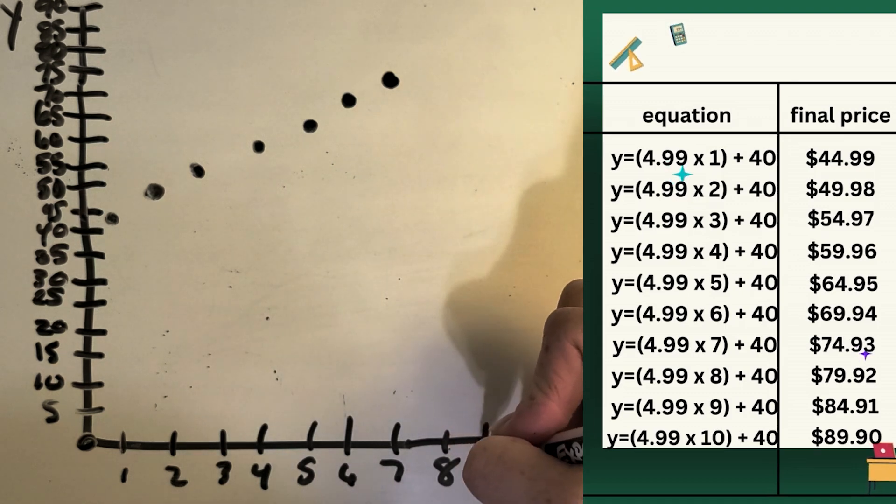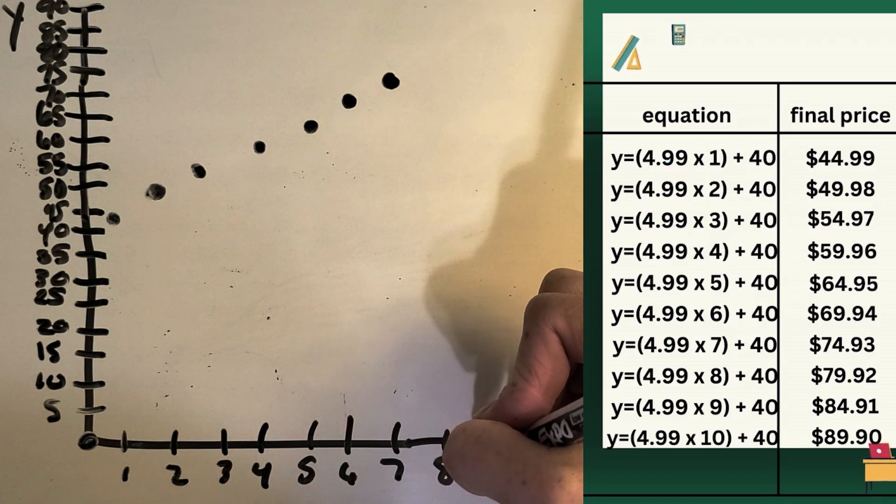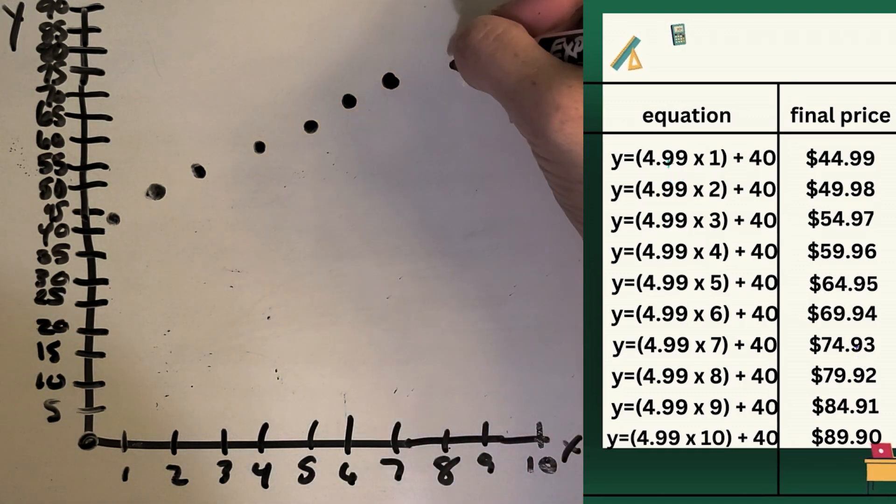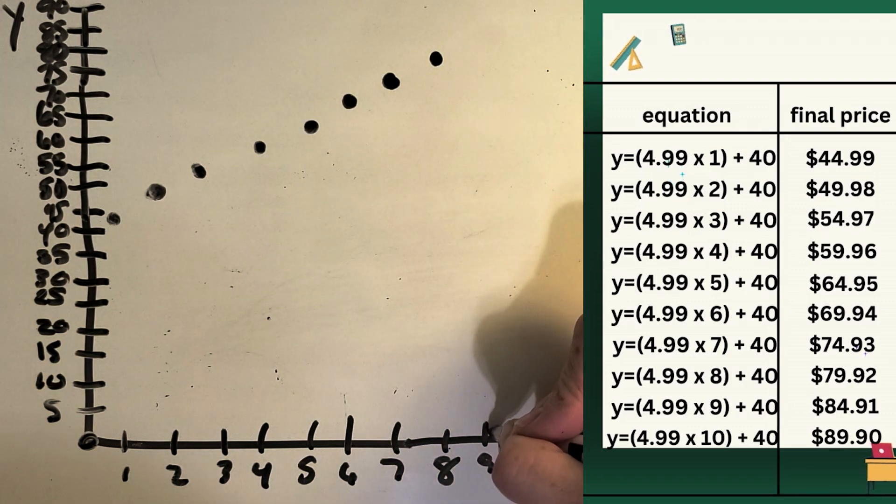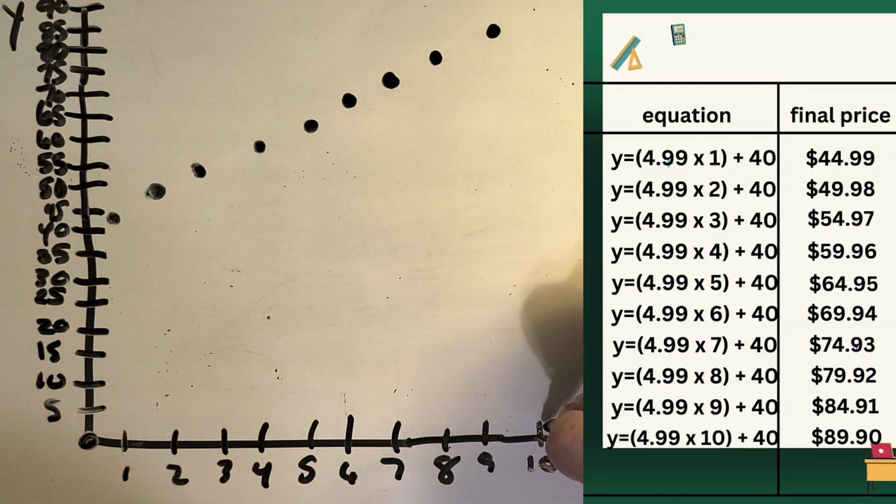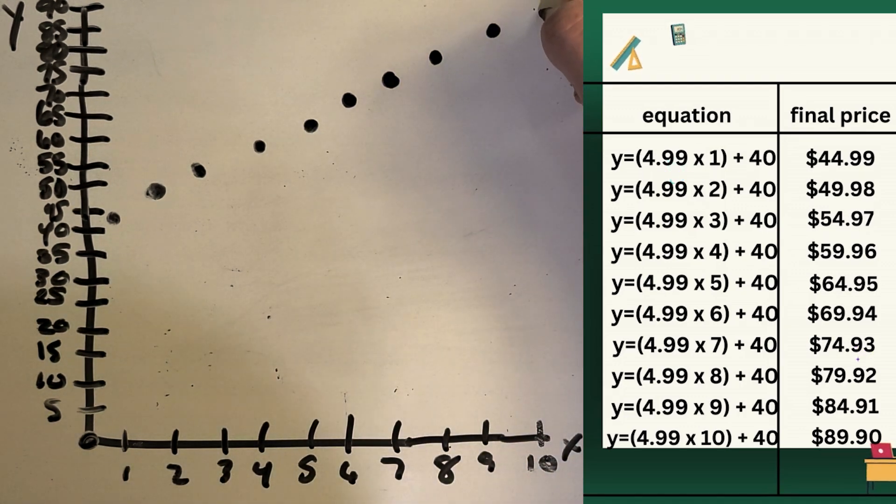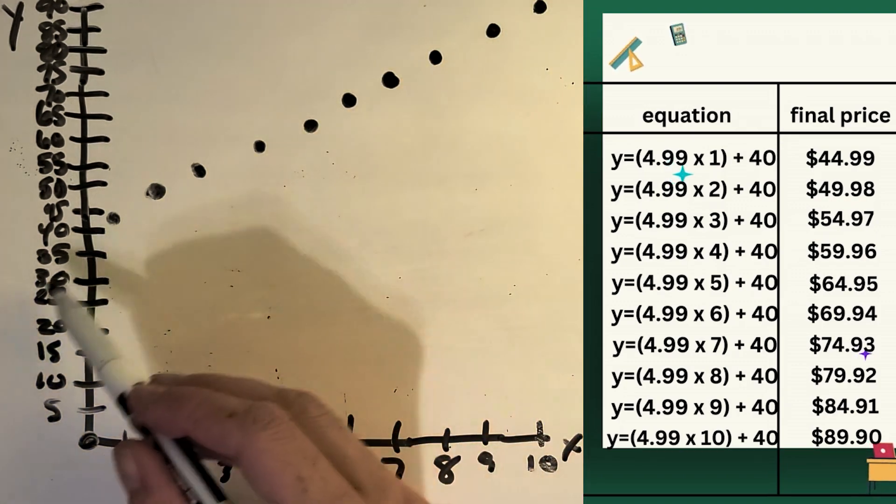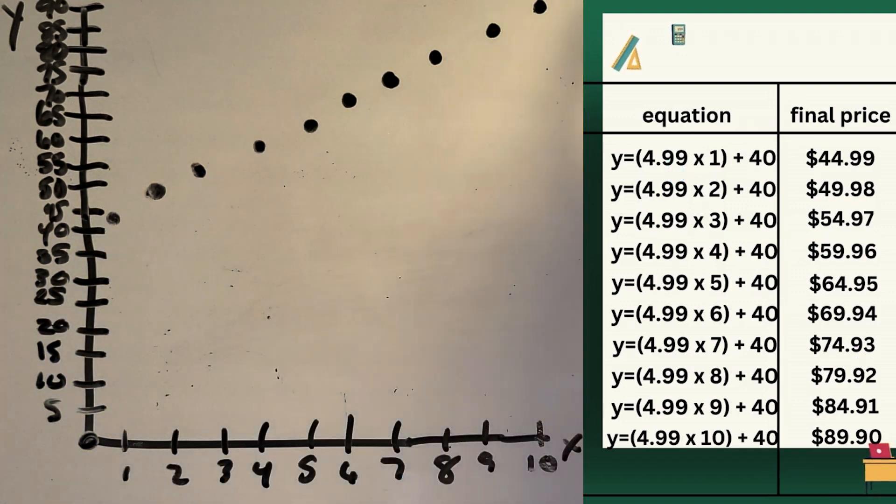Okay, let's see. Eight was $79.92. Okay, nine was $84.91. And then 10 DLCs was $89.90. Okay, and you're going to notice a straight line forming here.